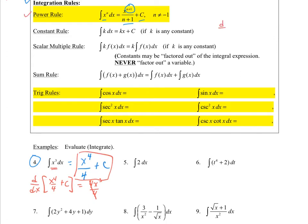Constant rule: what's the derivative of 3x? That's going to be 3. So if I take the antiderivative of 3, I should get 3x plus c. That's what the constant rule tells me — any constant k dx is going to be kx + c. Scalar multiple: a constant just goes along for the ride, so it doesn't matter if it's inside or outside. The key is that it's only a constant — you can never take out a variable and put it out in front. Later on we'll do some balancing, but you can't balance a variable either, so be very careful with that.